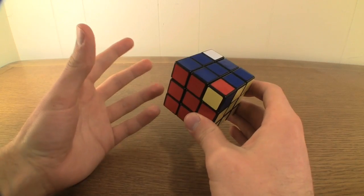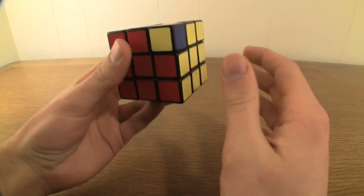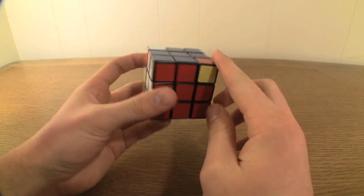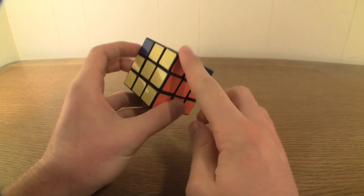If you did all of this correctly, while they won't necessarily be oriented correctly, all four of your top layer corner pieces should be in the correct locations.